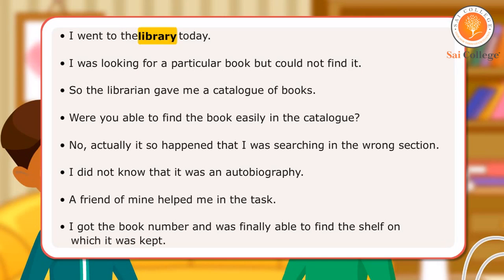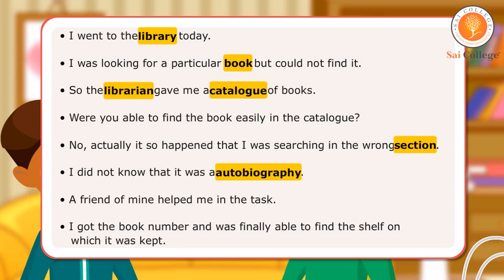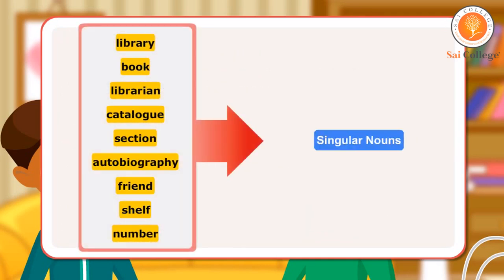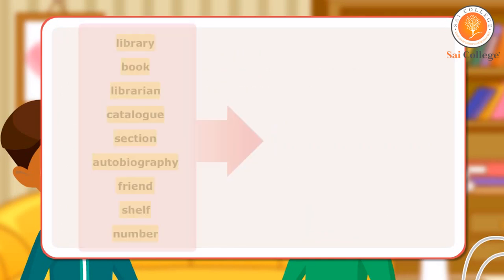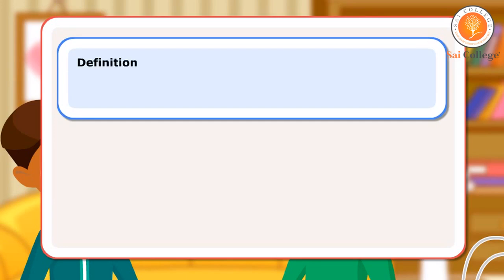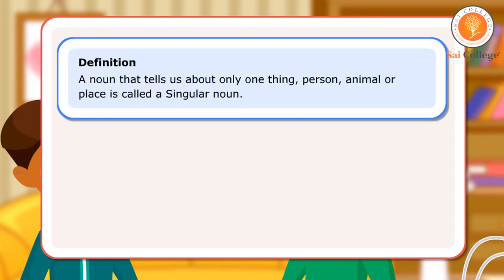The words library, book, librarian, catalogue, section, autobiography, friend, number, and shelf are examples of singular nouns. Definition: A noun that tells us about only one thing, person, animal or place is called a singular noun.